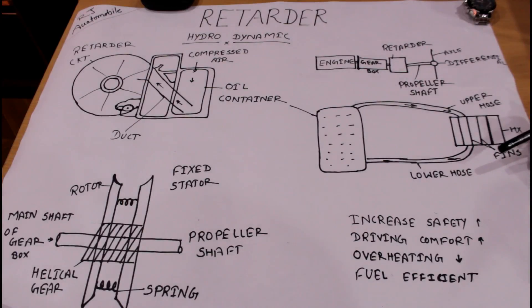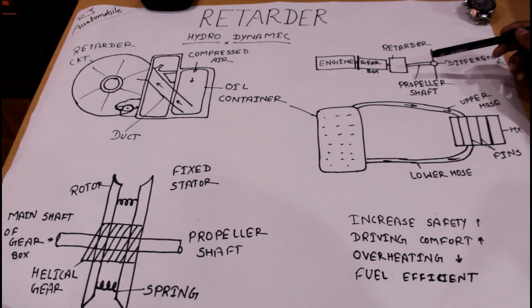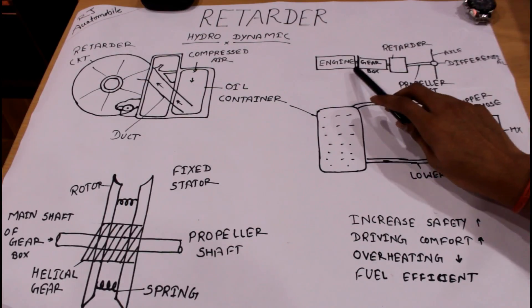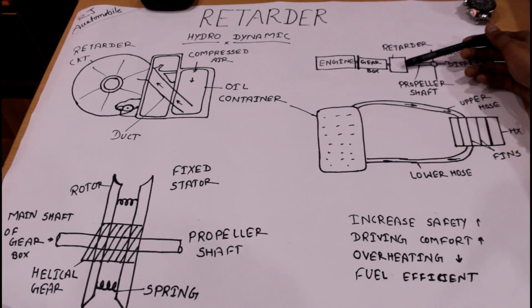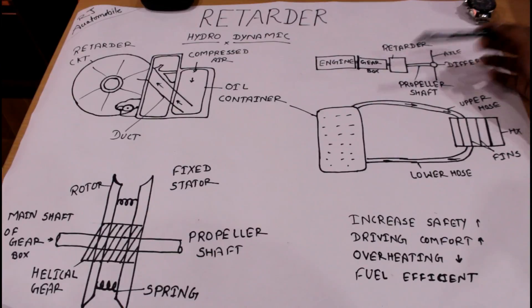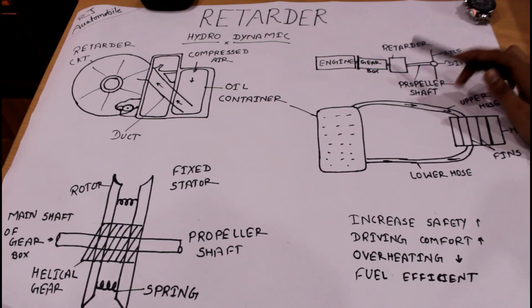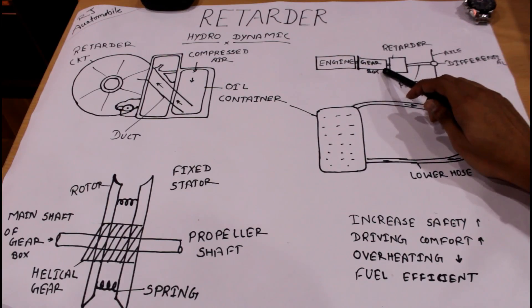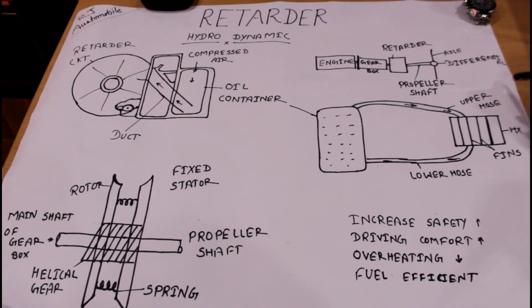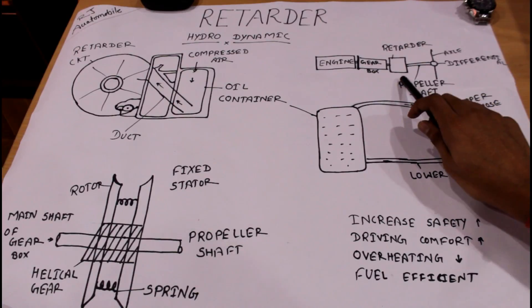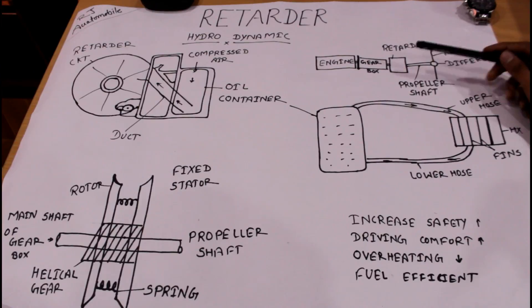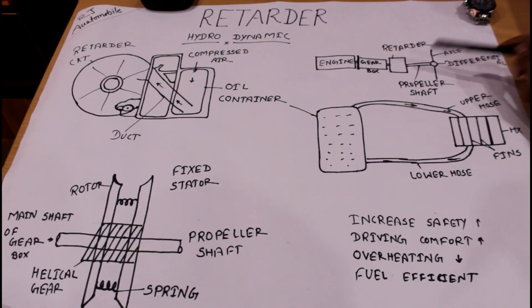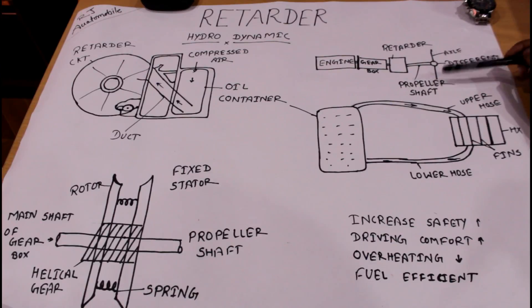First of all, where is the retarder situated? After the gearbox and before the propeller shaft, the retarder is situated. The retarder is directly coupled with the gearbox, and then after retarding, power is transmitted to the propeller shaft, then differential, and then to both axles.